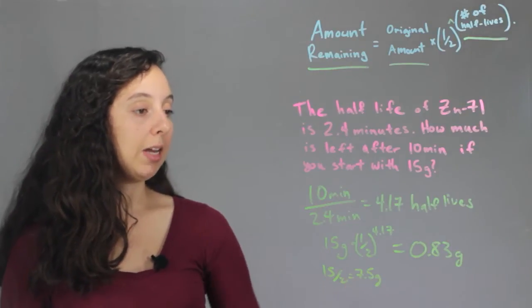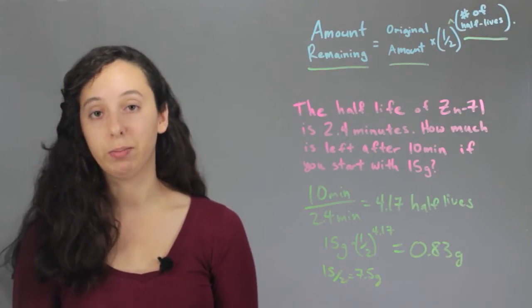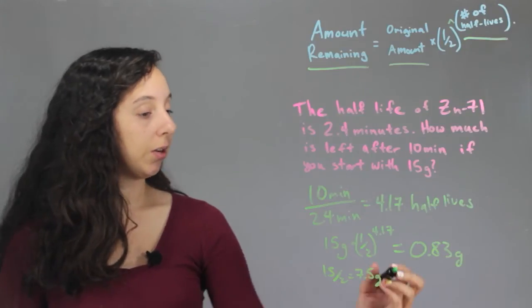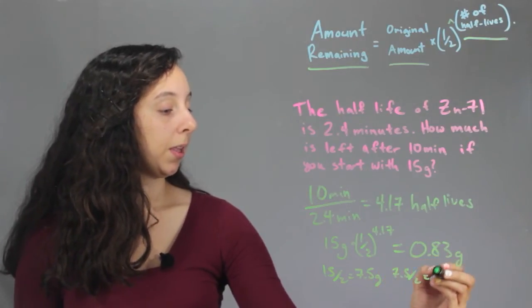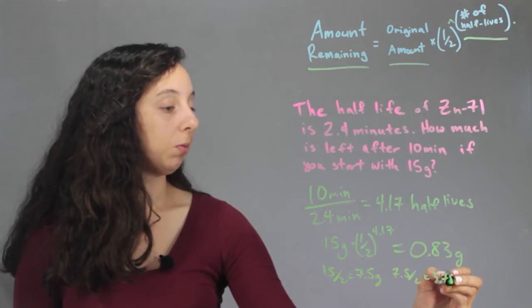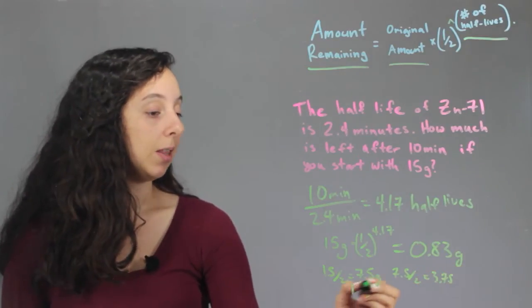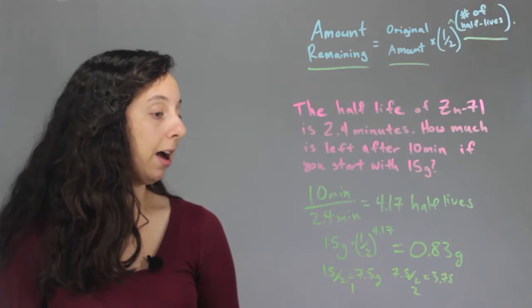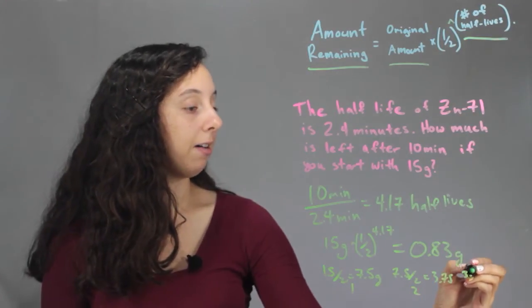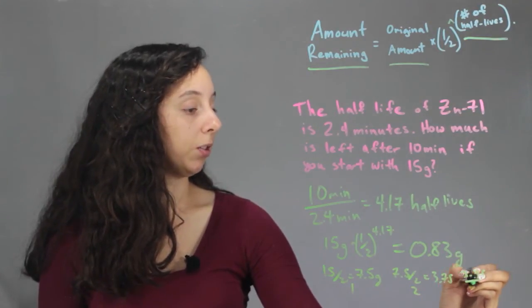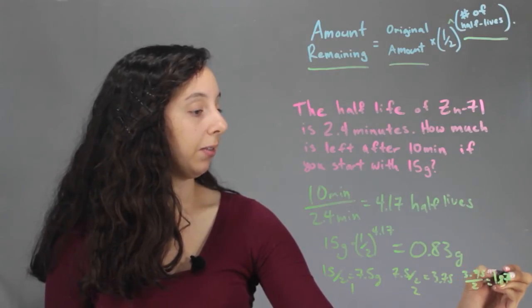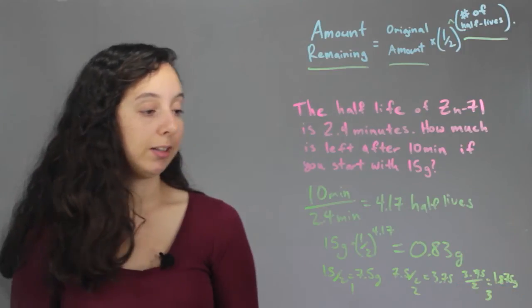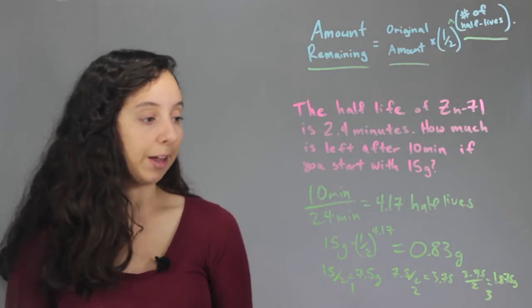And remember, we had a little bit over 4 half-lives, so let's just estimate what that would be like. So, 7.5 over 2 equals 3.75, so we know that after 2 half-lives, this is how much we'll have left. And now, if we take 3.75 over 2, that equals 1.875 grams. This is now 3 half-lives, and let's do our last full half-life.